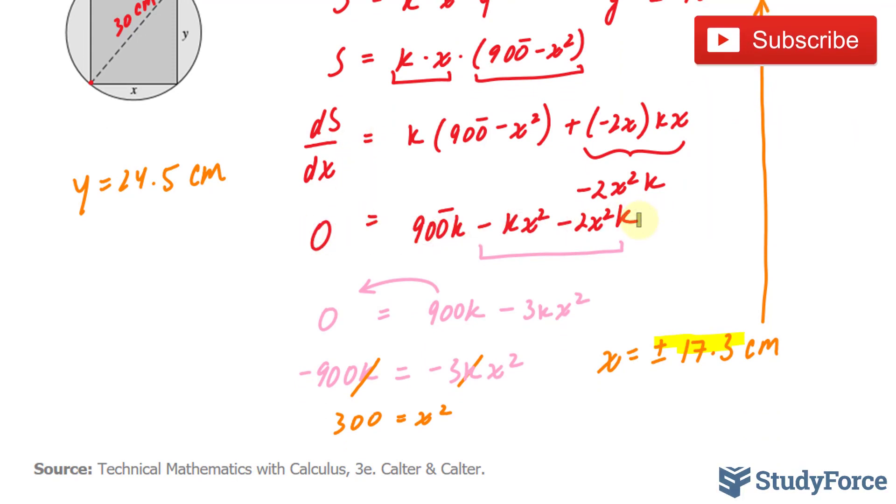We take the second derivative and substitute positive 17.3. If the output of that function is positive, then it's a minimum, and the opposite is true if it is negative.